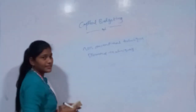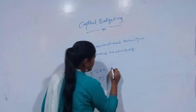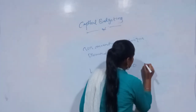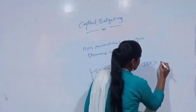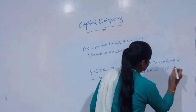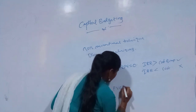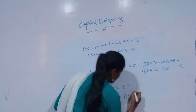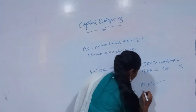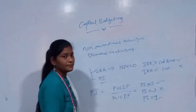We have discussed NPV and its decision rules. For IRR — internal rate of return — we set NPV equal to 0 and solve for the rate. The decision rule is: if IRR is greater than the cost of capital, we accept the project; if IRR is less than the cost of capital, we reject the project. For the profitability index, the formula is: present value of cash inflows divided by present value of cash outflows. If profitability index is more than 1, we accept; if less than 1, we reject; if equal to 1, it is a break-even. Thank you.